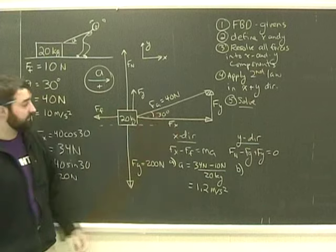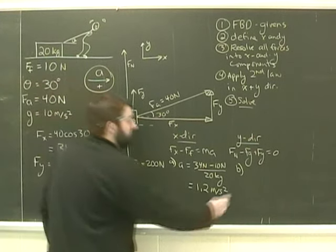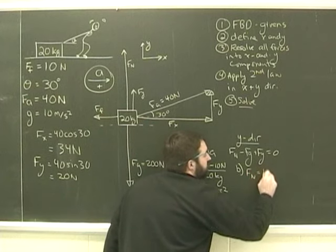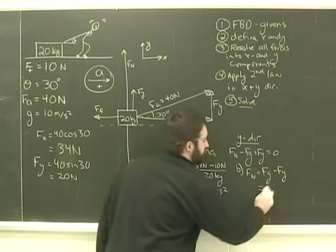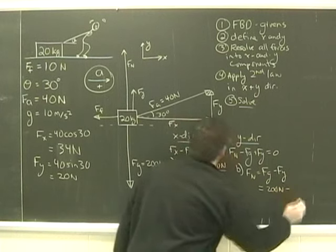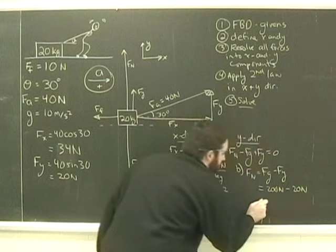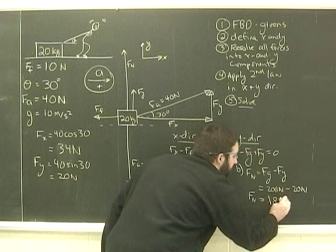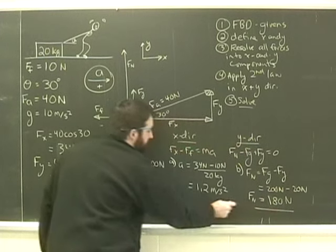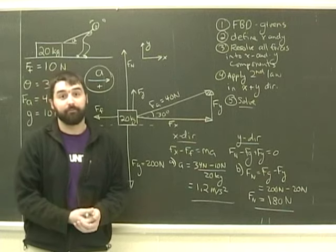For part b, I'm trying to find the normal force, so I rearrange: Fn equals Fg minus Fy, 200 newtons minus 20 newtons. Therefore, the magnitude of the normal force is 180 newtons. I write my statement, and I'm done.